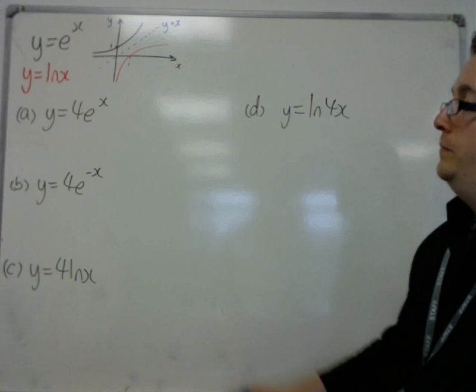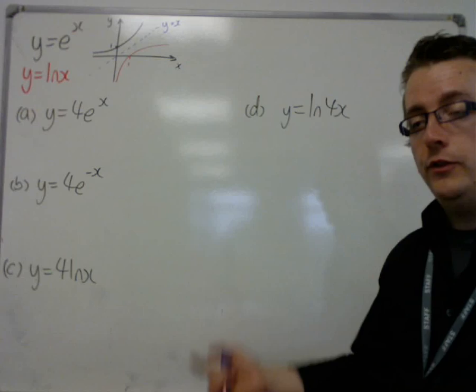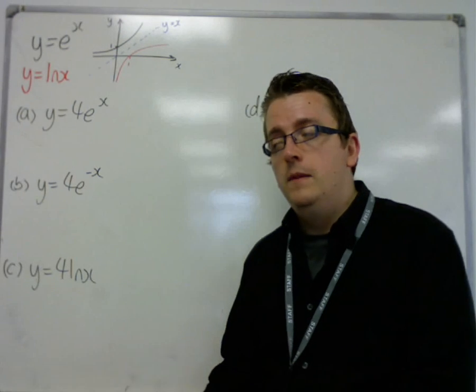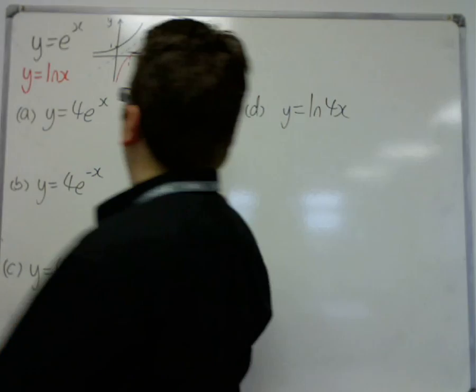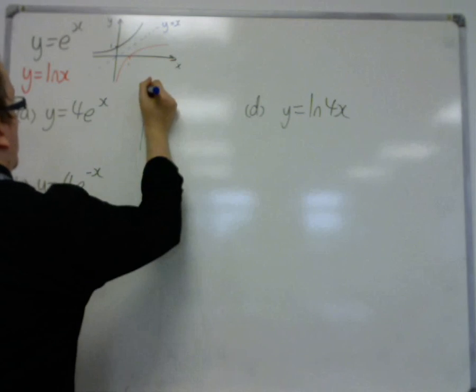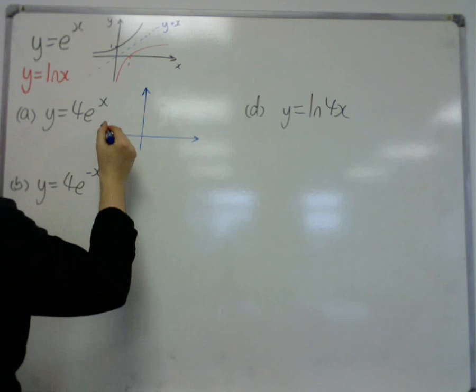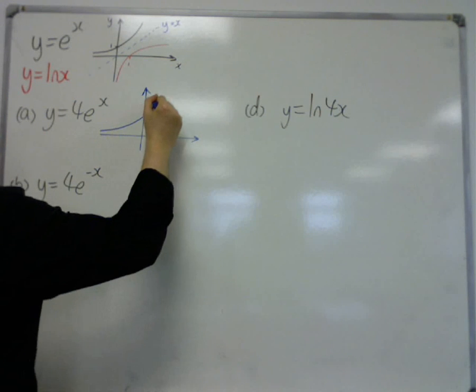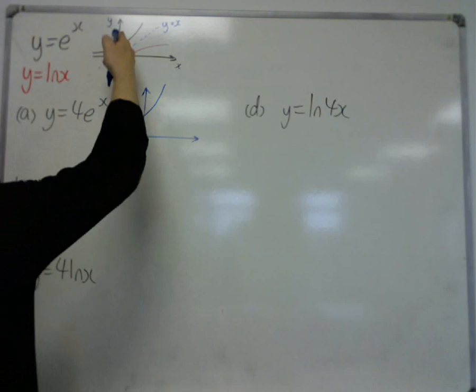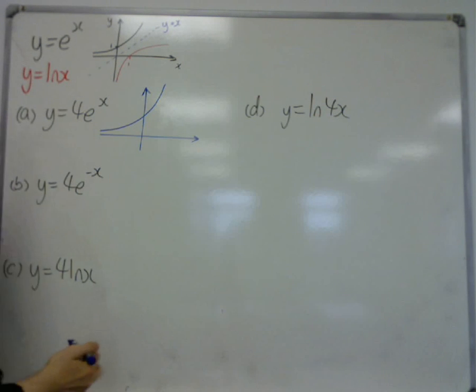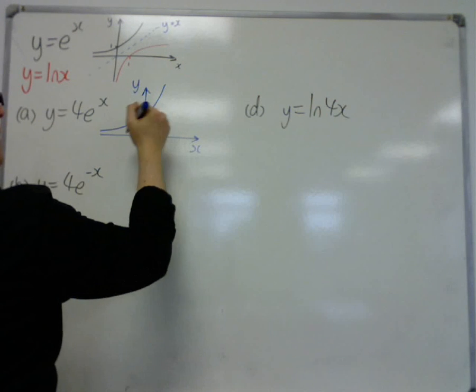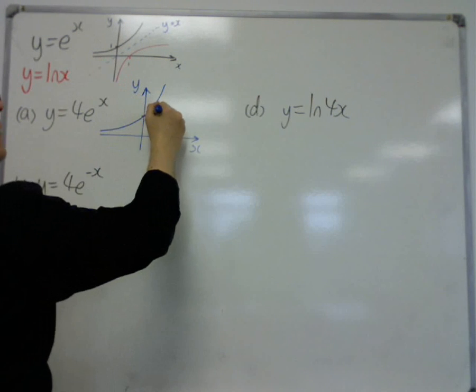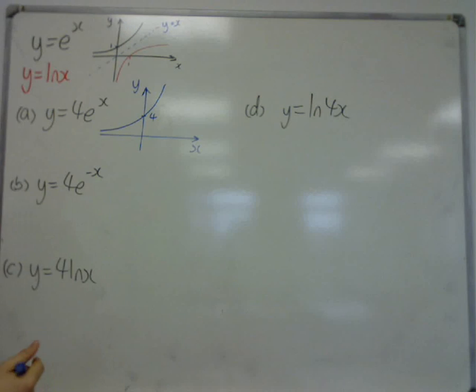So, first of all, looking at this first one, 4e to the x, the 4 in front of the function means that the graph has stretched in the y direction by a factor of 4. So, if we look at this new sketch, it will still have the same shape, inherent shape of y is equal to e to the x, but because it's been stretched by a factor of 4 in the y direction, instead of going through 1, it will now be going through 4. So, we can simplify this sketch like so.